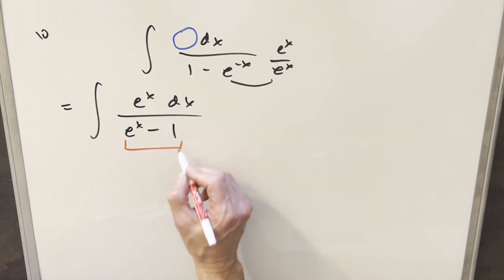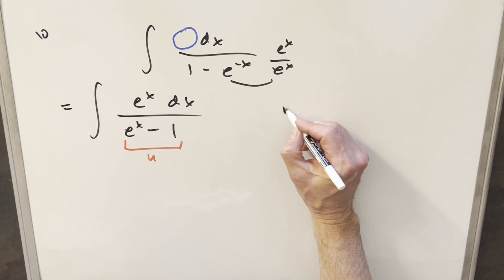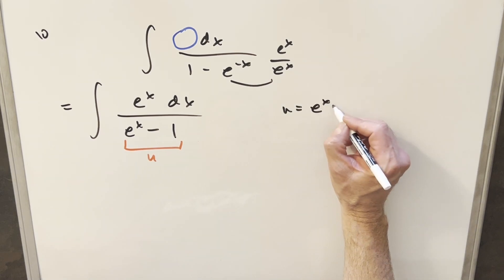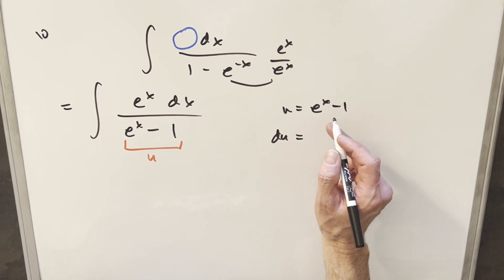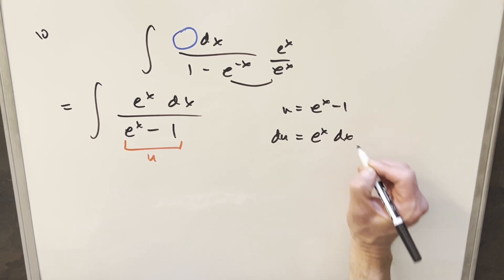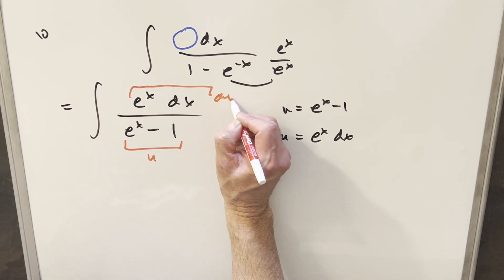But now we're in good shape for a u-substitution. I'm going to make this here my u. So we'll say u equals e to the x minus 1. And the beauty of doing u-substitutions when we have e to the x is the derivative of e to the x is just e to the x. So this is going to be real easy. du is going to be e to the x dx. That's exactly what we have up here. This is our du.